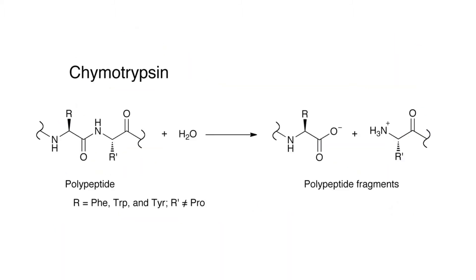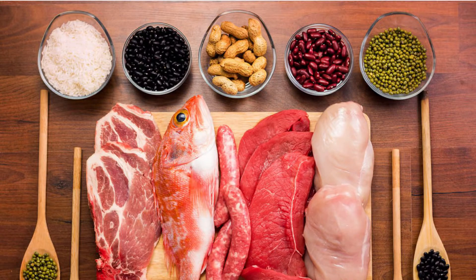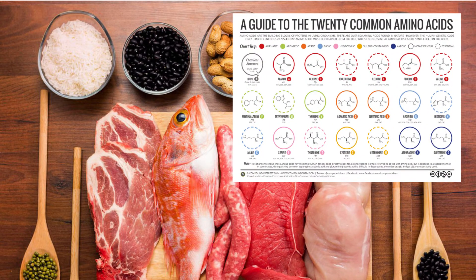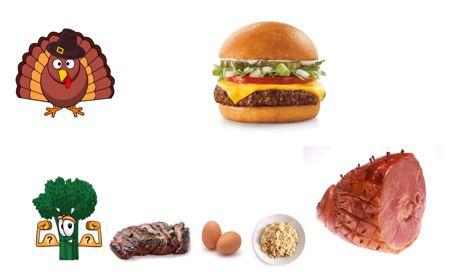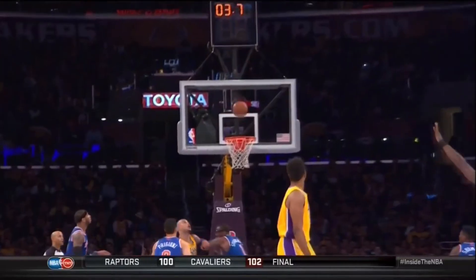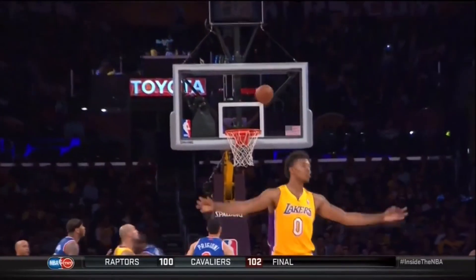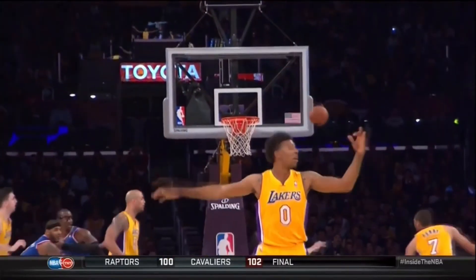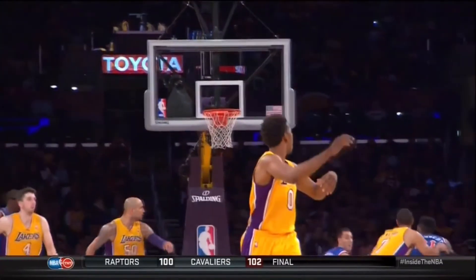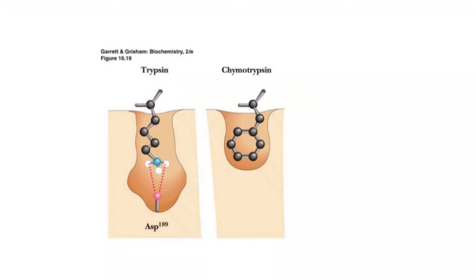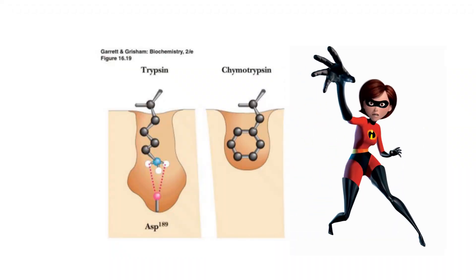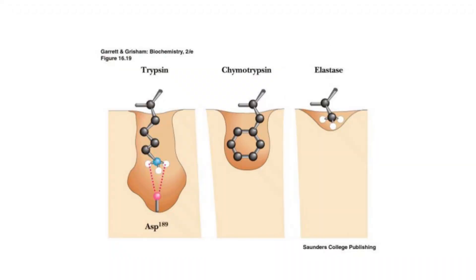The reason that we have these proteases in our body is to get the amino acids from the proteins that we get from foods such as turkey, hamburgers, and other meats and other foods. We have three basic types of serine proteases: trypsin, chymotrypsin, and elastase.